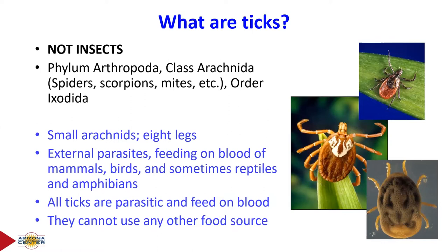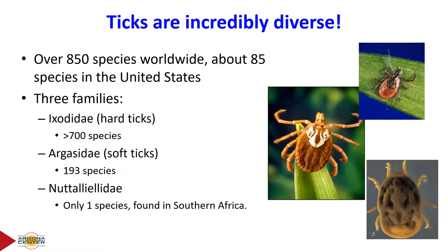All ticks are parasitic — they cannot use any other food source. Ticks are incredibly diverse. There are close to 900 species described worldwide, about 85 here in the US, and only three families of ticks, which makes them easier to study.